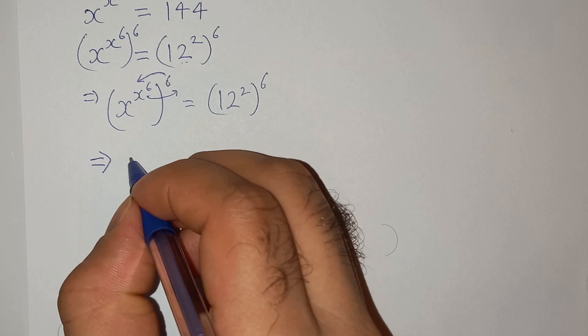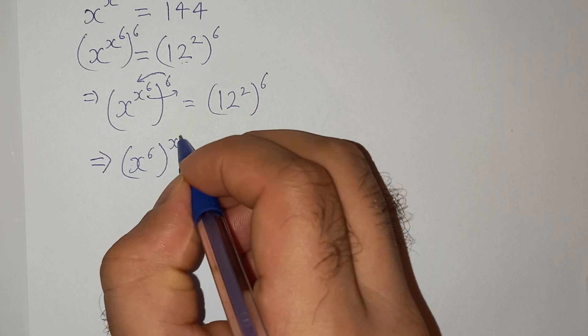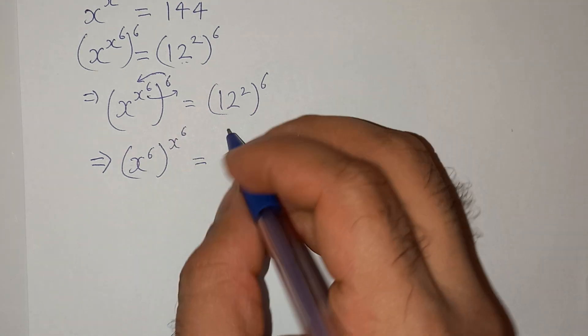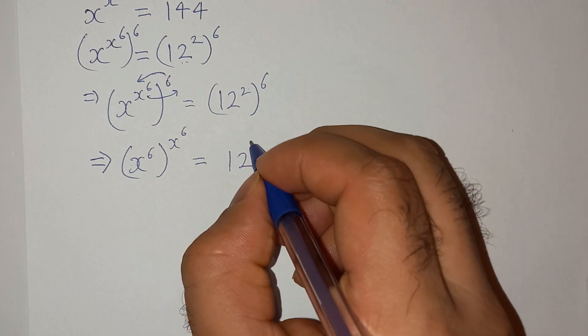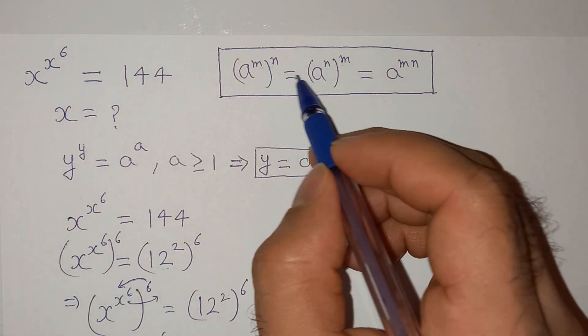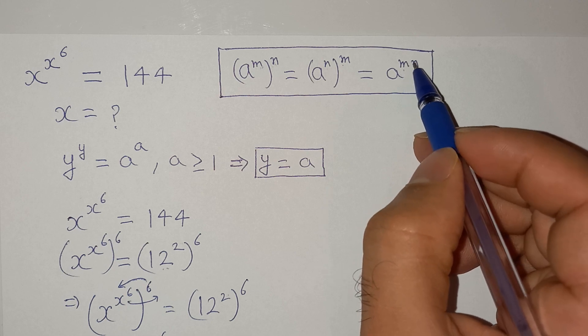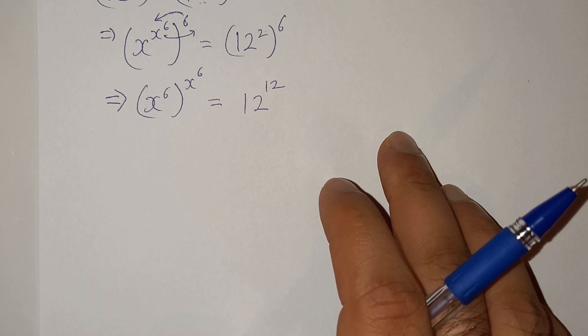So this can be written as (x^6)^(x^6) = 12^12. This 2 multiplied by 6 is 12, power 12. So basically this is the rule (a^m)^n = a^(m×n).